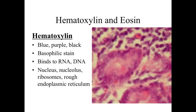The most common staining method used in light microscopy is hematoxylin and eosin. The first part, hematoxylin, stains blue, purple, or black and is referred to as a basophilic stain, meaning it binds to things that are acidic — things like RNA and DNA. So structures with lots of DNA or RNA — like the nucleus of the cell, the nucleolus with condensed DNA and RNA, and ribosomes and rough endoplasmic reticulum where RNA is present — will all stain blue or black.